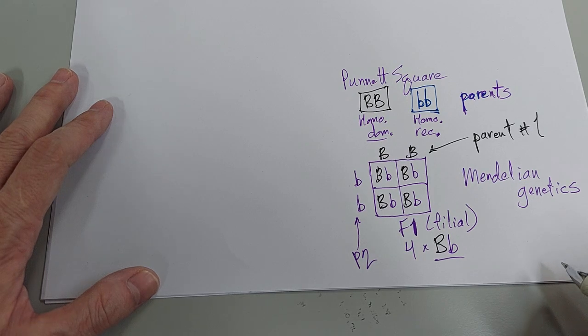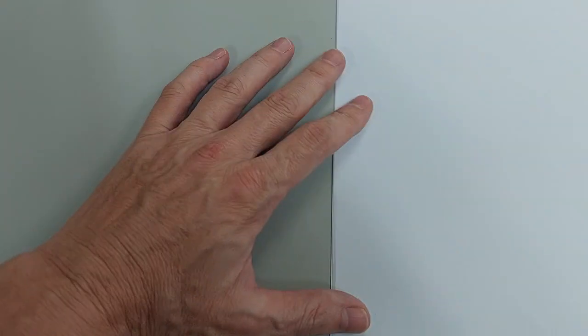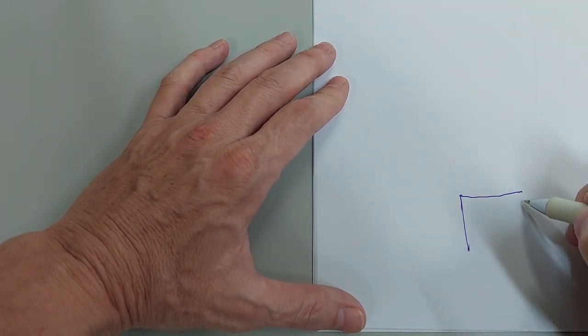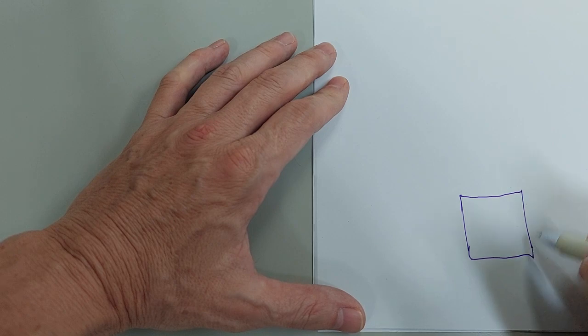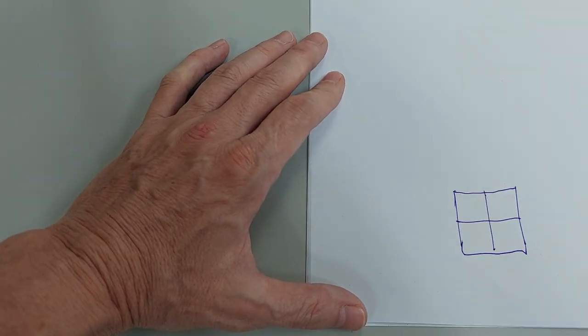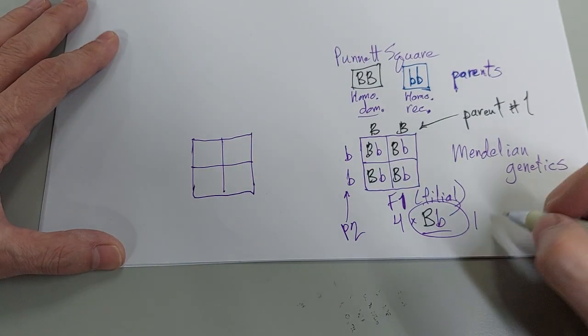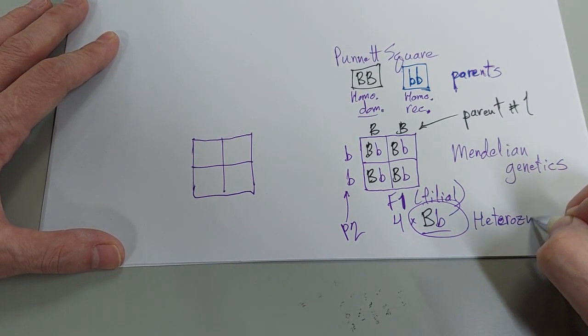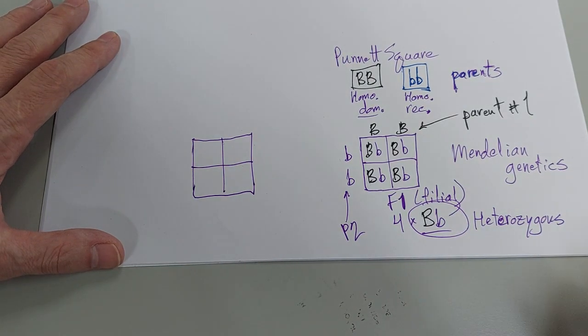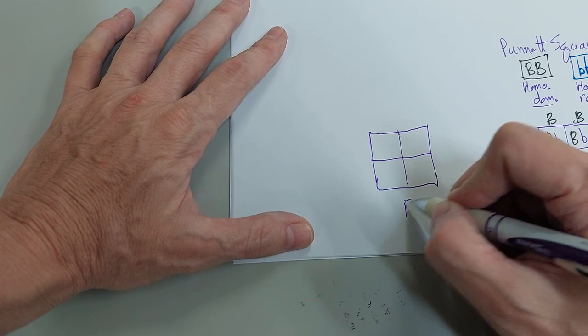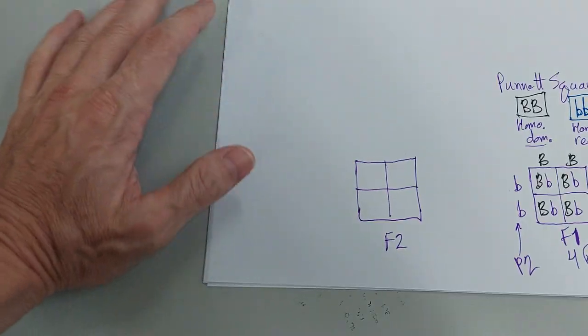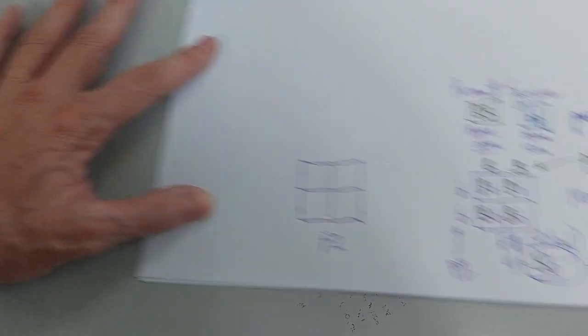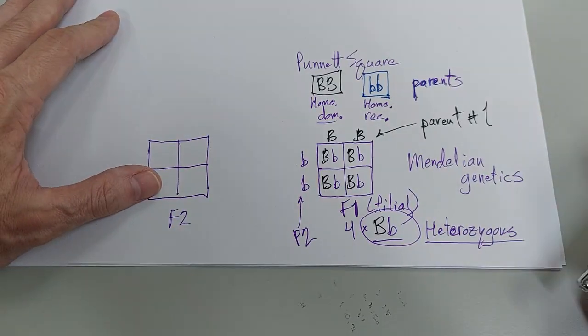So this is the thing that Mendel did. He went to the F2. So this is F1, and people were confused. Like, oh my gosh, we got all the same thing. It's blending kind of like when you mix paint. This isn't really that interesting. Here's what we do. And here's what Mendel did. So Mendel took these. These are what are called heterozygous. So he took the F1 generation. So we're going to make an F2 generation.